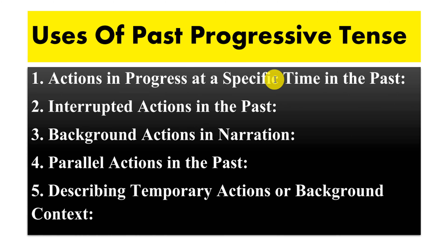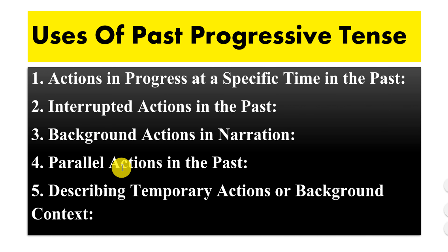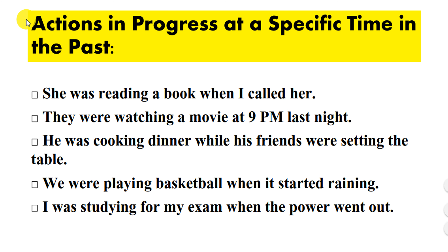Number one is actions in progress at a specific time in the past. Number two is interrupted actions in the past. Number three is background actions and narration. Number four is parallel actions in the past. And number five is describing temporary actions or background context.